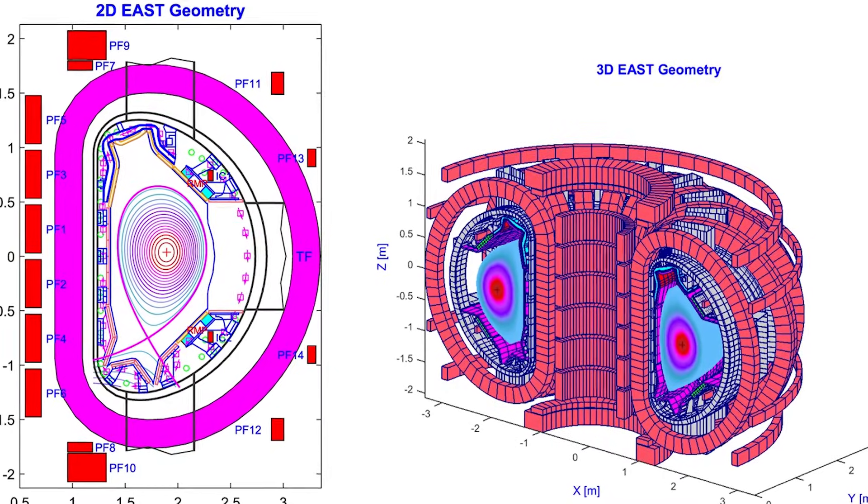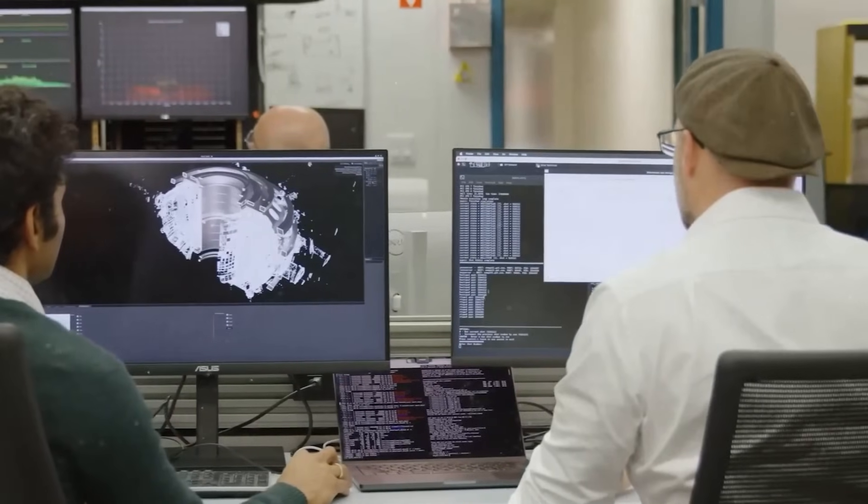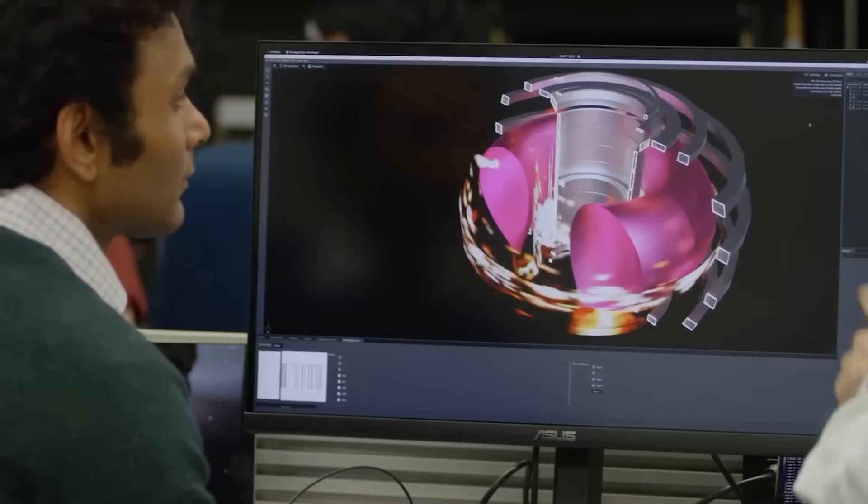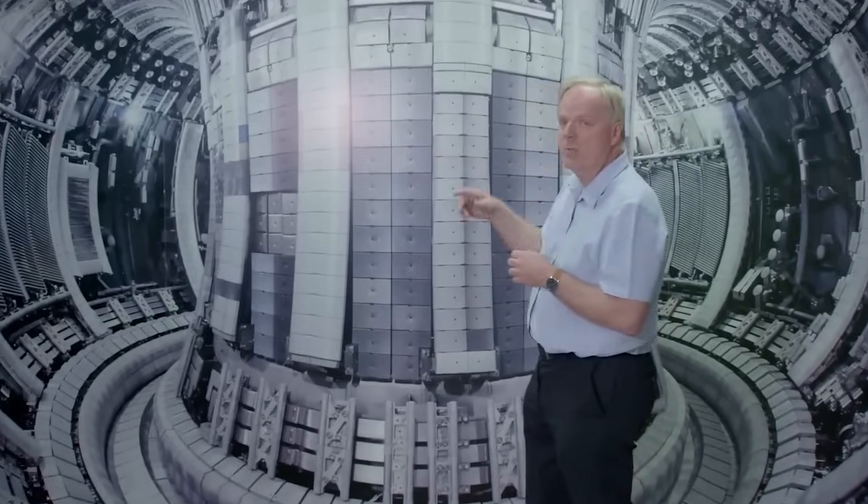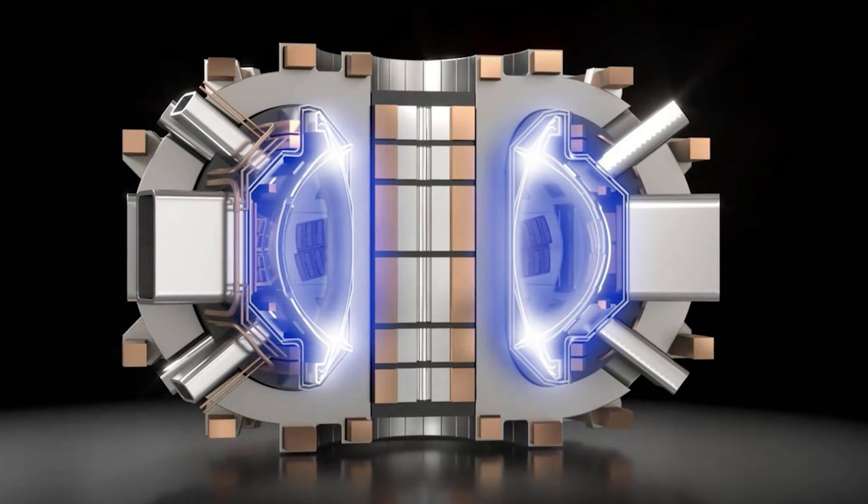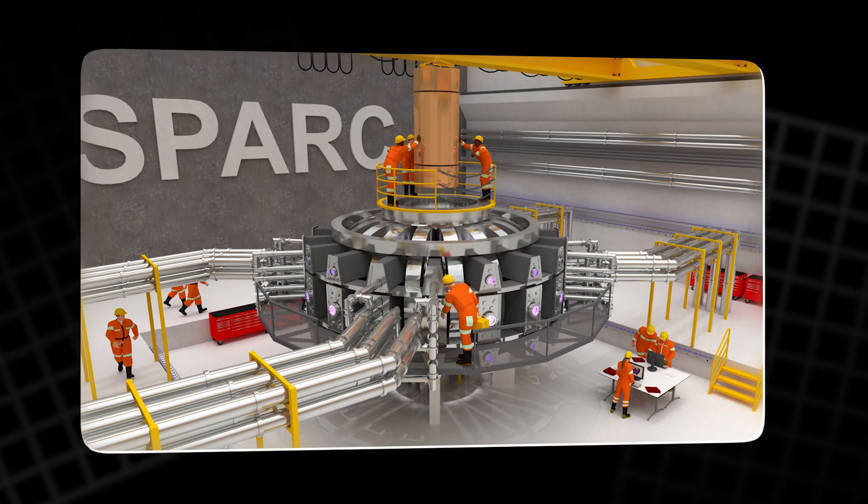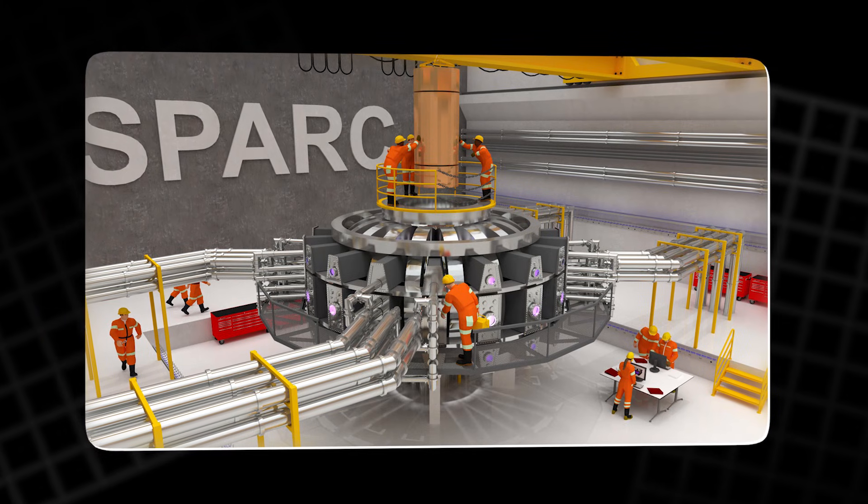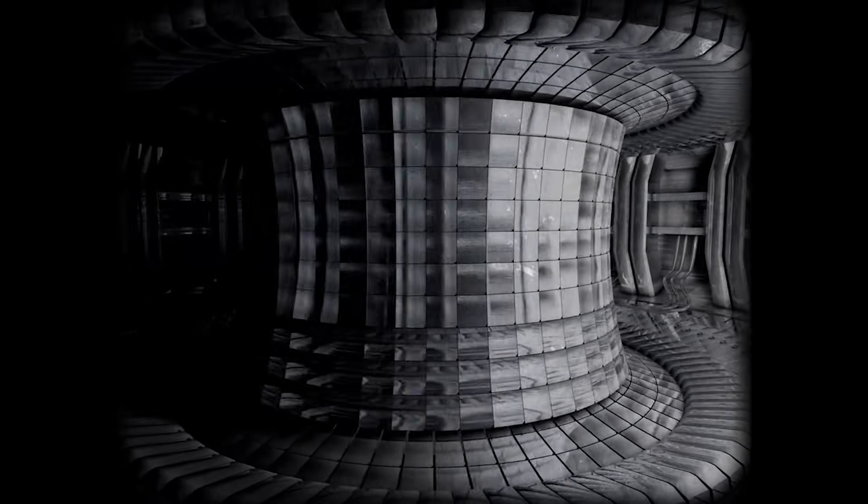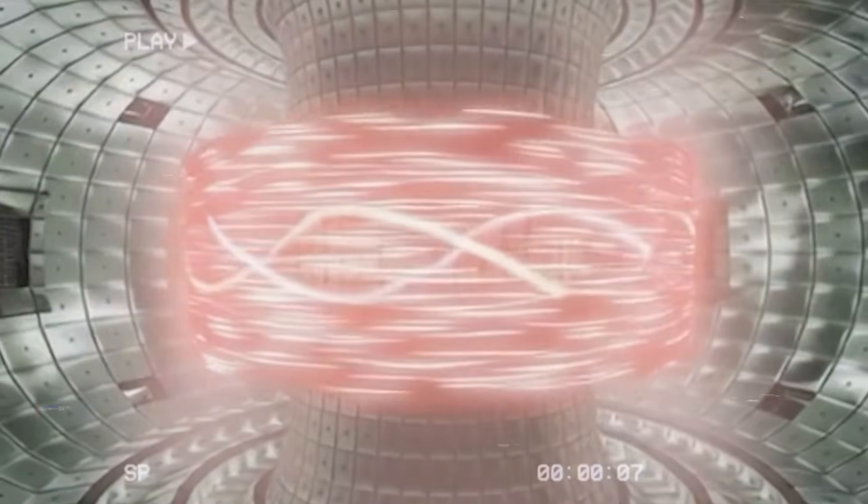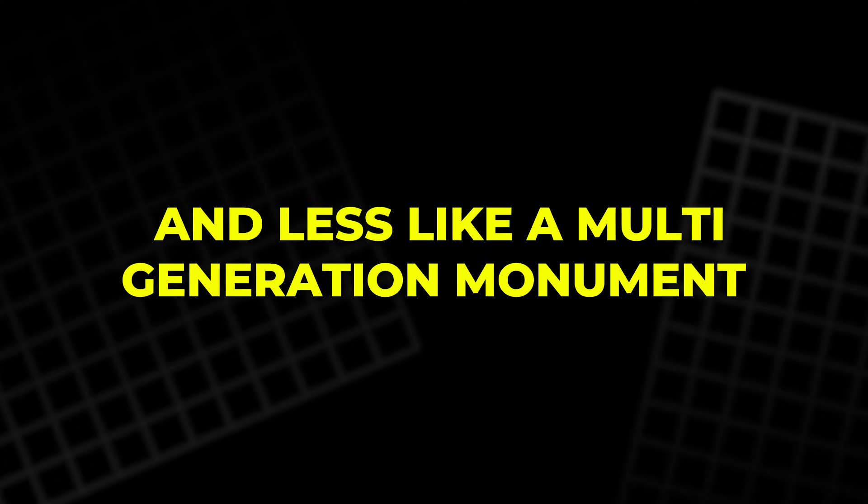Keep the tokamak concept, but shrink the machine by raising the field. Smaller machines can be built faster, tested sooner, and improved more often. Instead of waiting for a single global machine to answer everything, you build a tight prototype, learn, and build the next one. This approach is why Spark became the name to watch. If the magnets can do what the models say, a compact reactor can chase the same fusion goals as a giant one, but on a schedule and budget that looks more like modern engineering and less like a multi-generation monument.